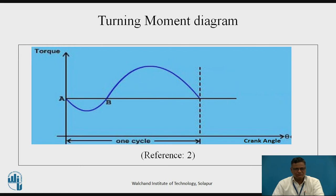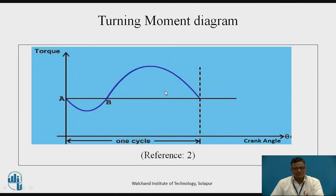The turning moment diagram is associated with the flywheel. We have seen it in detail in the first session, so here we will just revise it. In the case of internal combustion engines or reciprocating steam engines, we do not have constant output torque with reference to the crank angle. The crankshaft rotates about its own axis. If we represent the crank angle on the x-axis and the turning moment on the y-axis, the blue colored line shows that the torque is continuously varying. During the power stroke, energy is available, but during other strokes like suction, compression, and exhaust, power is consumed, causing variation in torque.